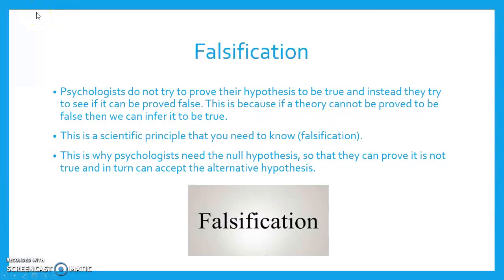Falsification. Psychologists do not try to prove their hypothesis to be true; instead they try to see if it can be proved false. This is because if a theory cannot be proved to be false, then we can infer that it is true. This is a scientific principle known as falsification. This is why psychologists need the null hypothesis — so that they can prove it is not true and in turn can accept the alternate hypothesis.